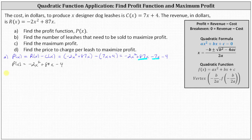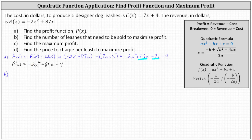Now for parts b and c, which go together. To find the number of leashes that need to be sold to maximize the profit and to find the maximum profit, we need to find the vertex of the parabola given by the profit function. Notice p of x is a quadratic function where the leading coefficient a is equal to negative 2, so the graph is a parabola that opens down, and therefore the vertex indicates the maximum.